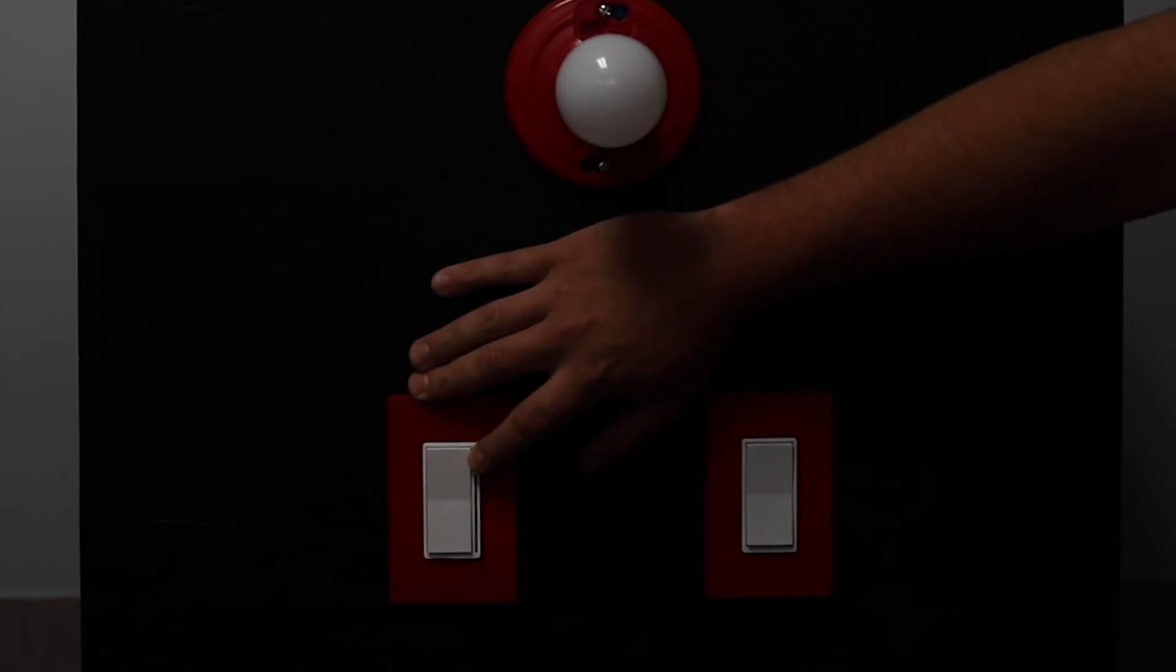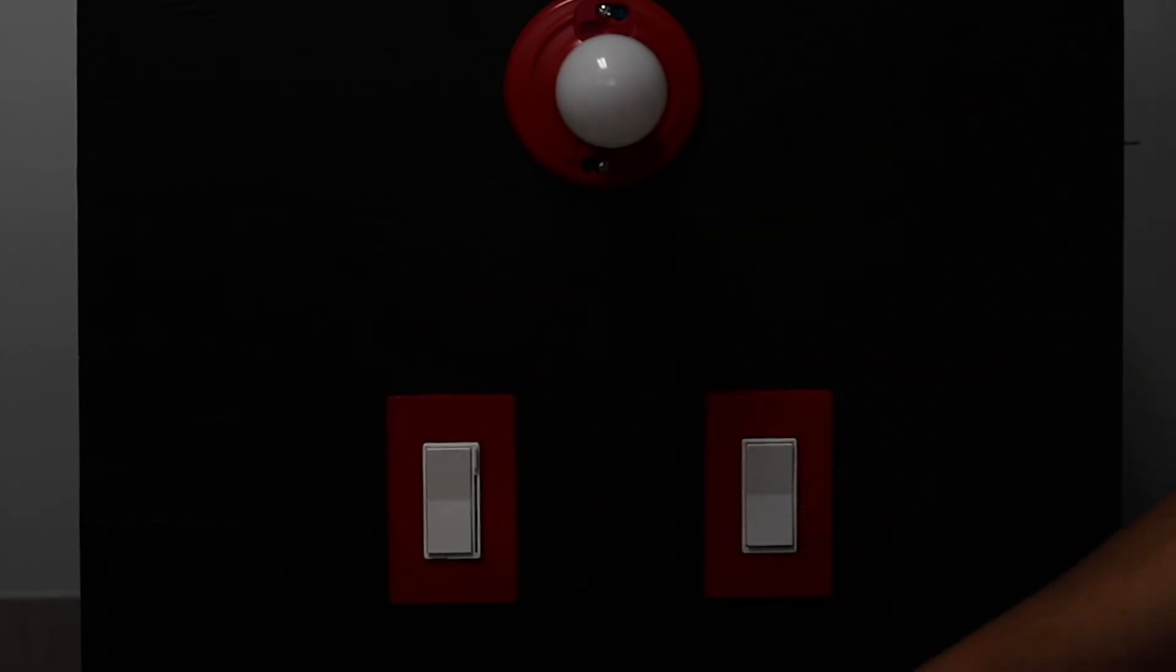We press and hold the configuration button again. This time you'll do it for 10 seconds. It'll turn green after five, it turns yellow after 10. And then once you're done, you release it. It'll blink cyan three times.